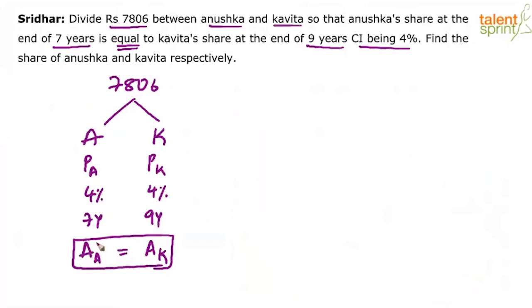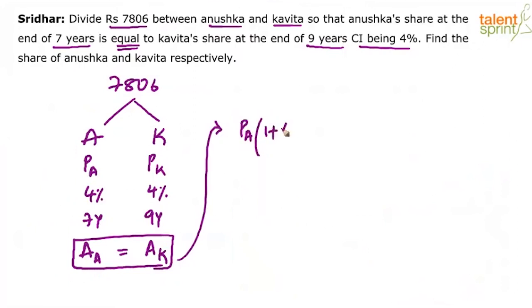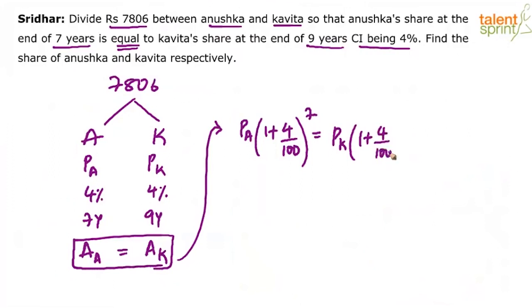How do you calculate amount? In compound interest, amount equals P into (1 + R/100) to the power of T. So we can write: PA × (1 + 4/100)^7 = PK × (1 + 4/100)^9. The rate of interest is the same in both cases.